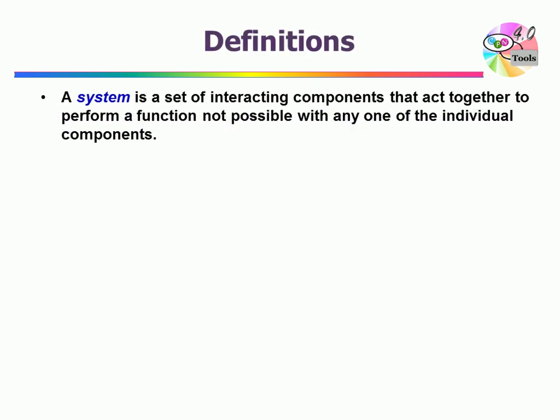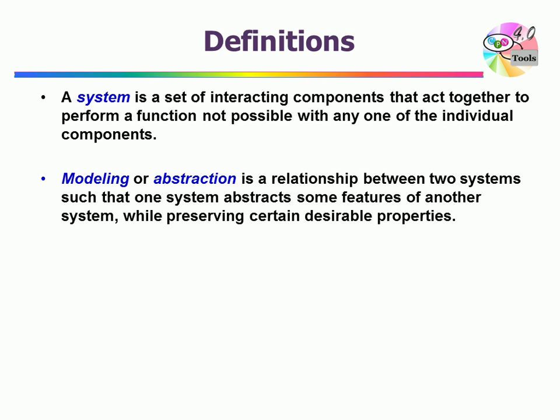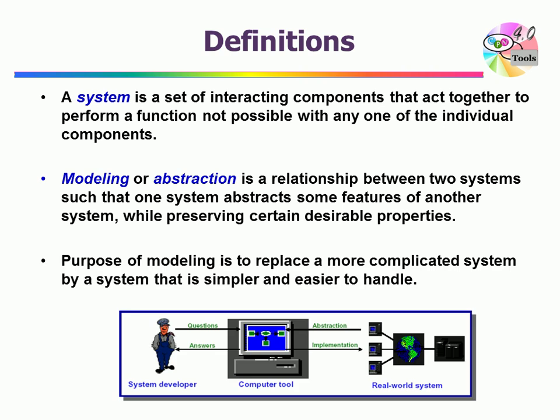We start with the definition of a system. A system is defined as a set of interacting components that act together to perform a function not possible with any one of the individual components. Modeling or abstraction is a relationship between two systems such that one system, the model, abstracts some features of another system while preserving certain desirable properties. The purpose of modeling is to replace a more complicated system by a system that is simpler and easier to handle, something that we can analyze that can help us answer certain questions.